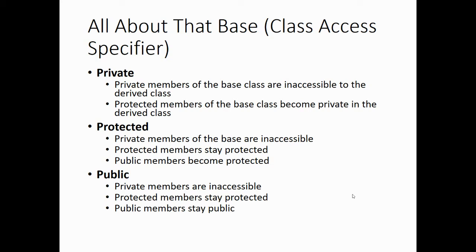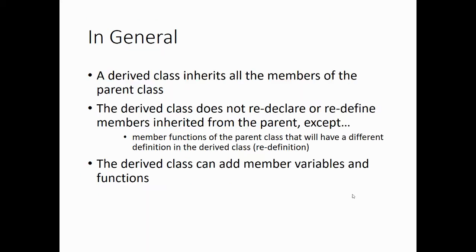Most of the time we're going to use public as the base class access specifier. The private members of the base class are inaccessible, the protected members stay protected, and the public members stay public. Protected and private have their uses for the base class access specifier, and we'll get to those later. We'll also talk about protected as a way of going in between public and private for member variables in a base class a little bit later in the lecture.